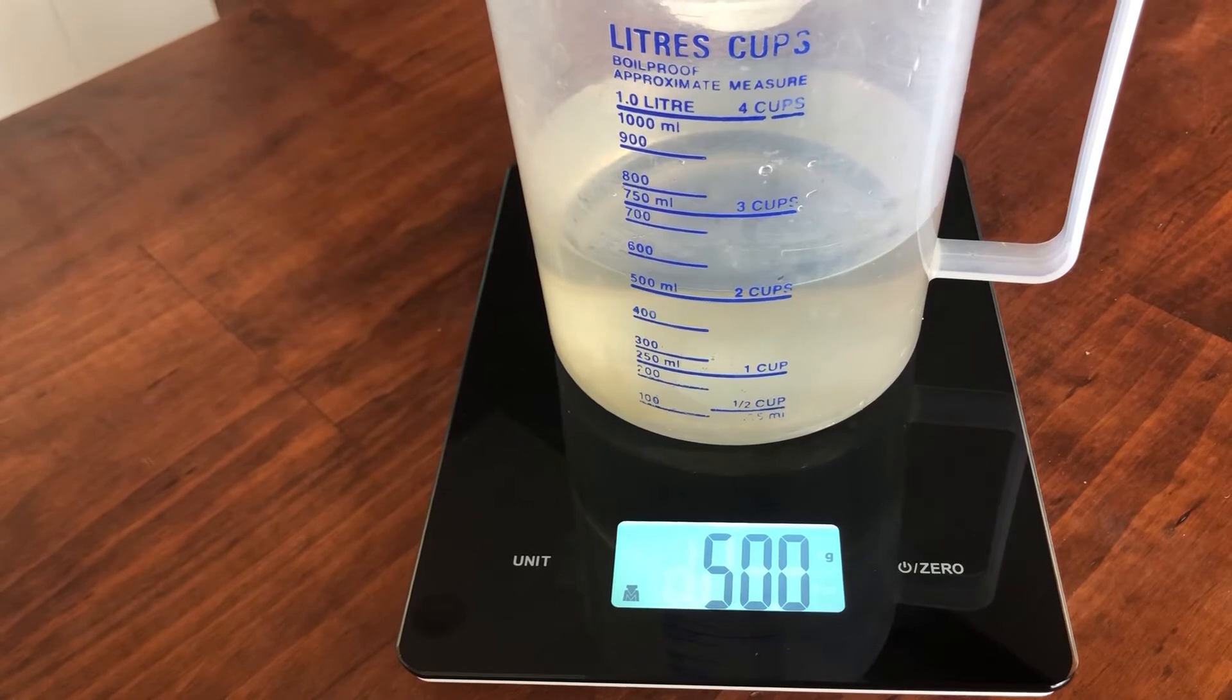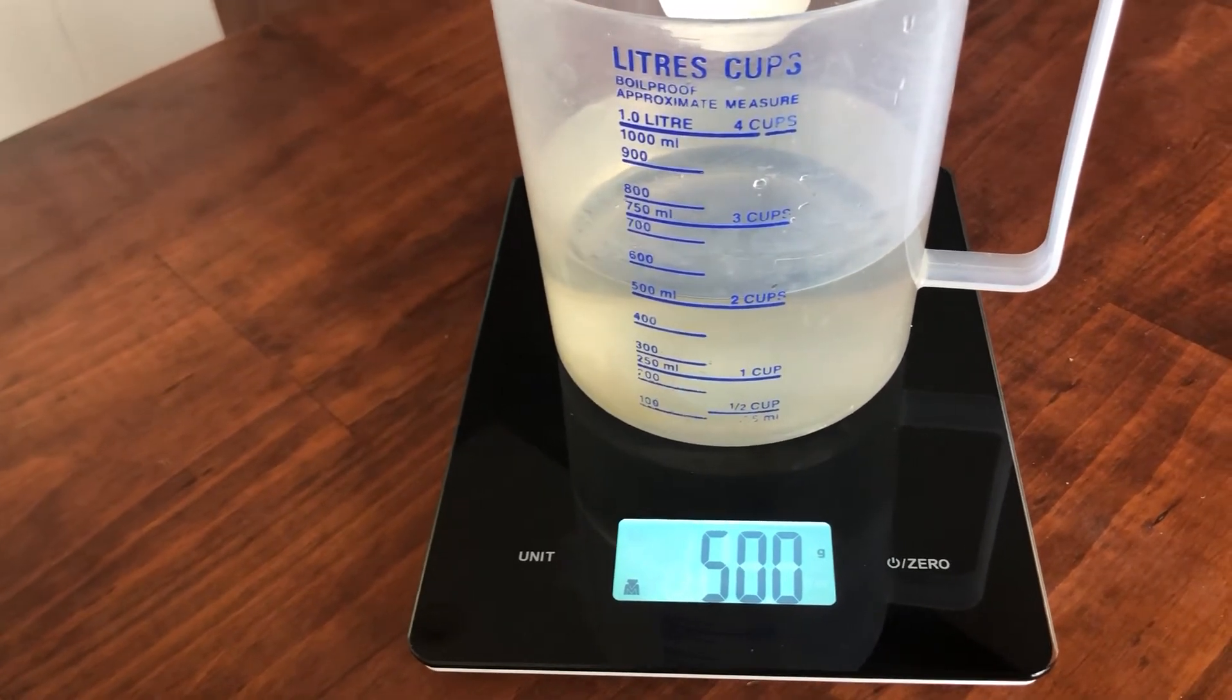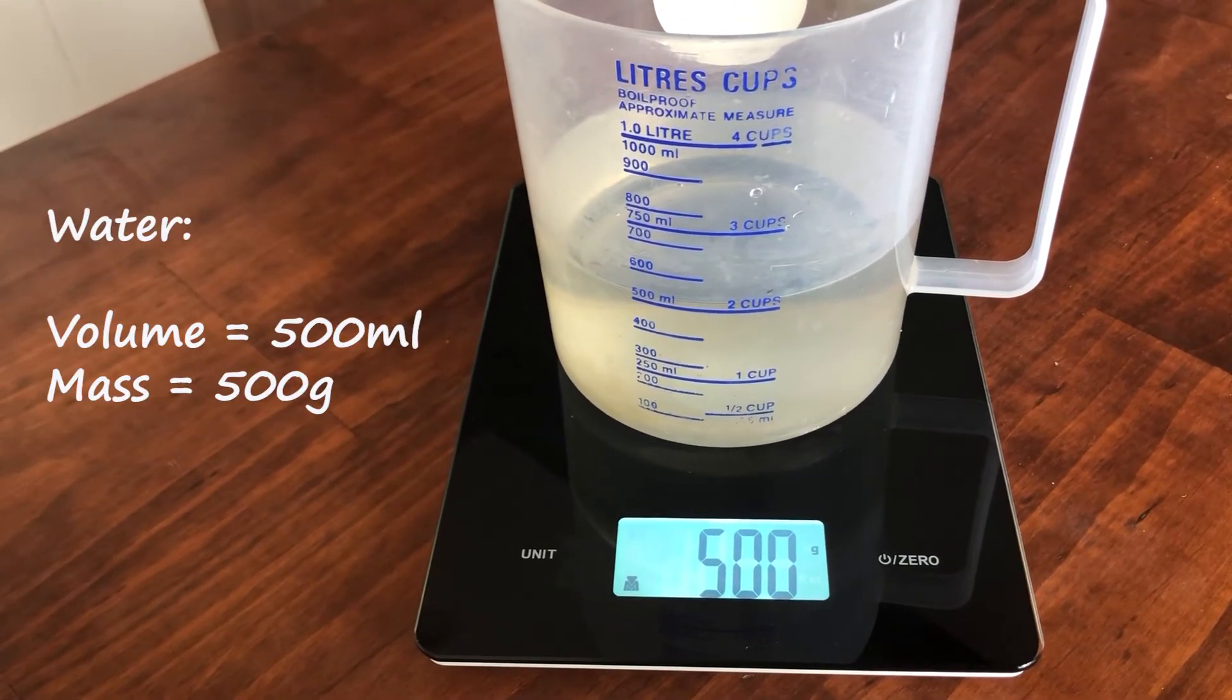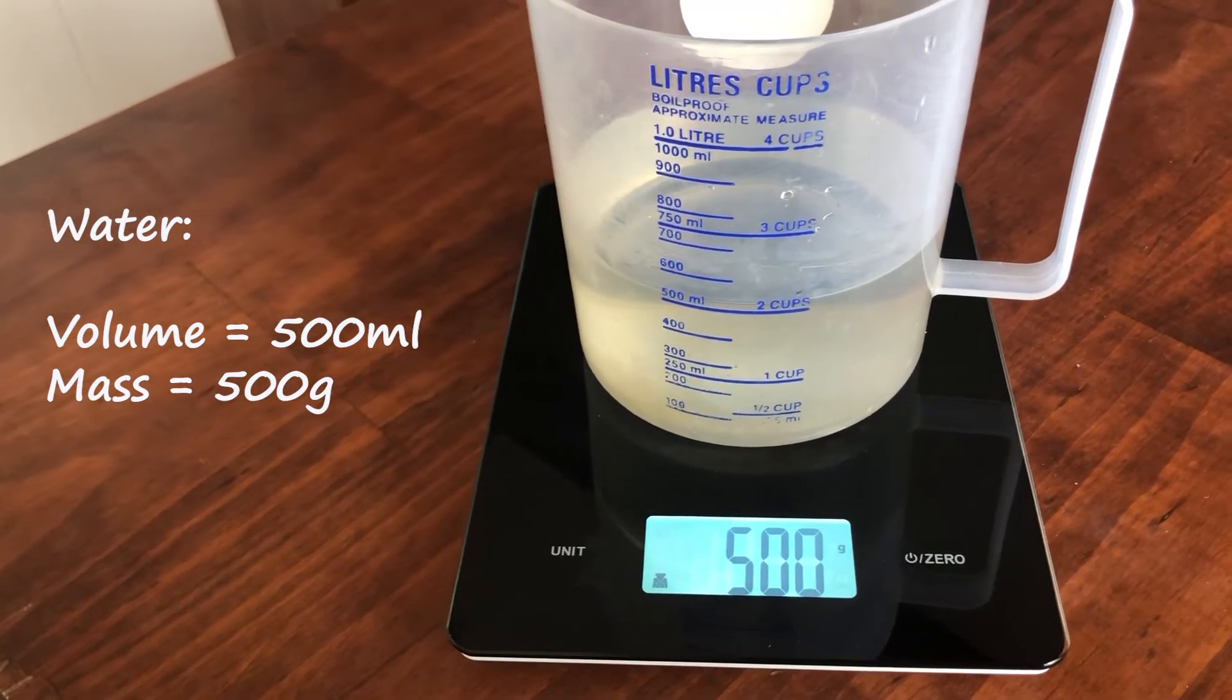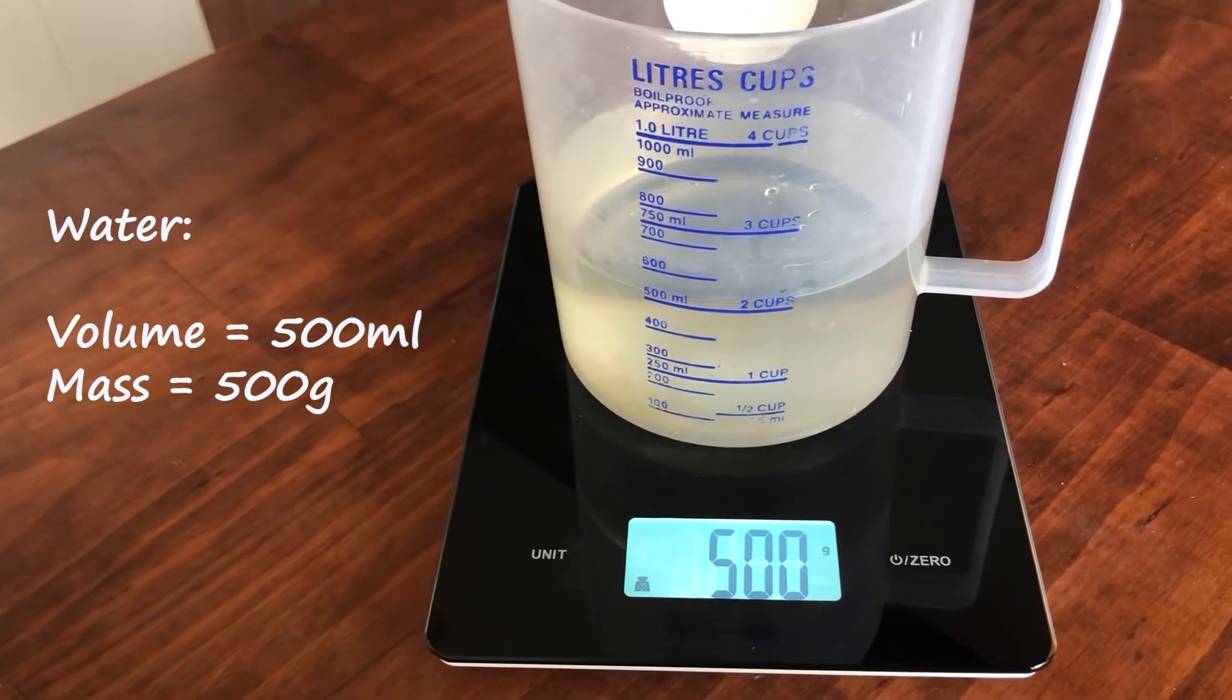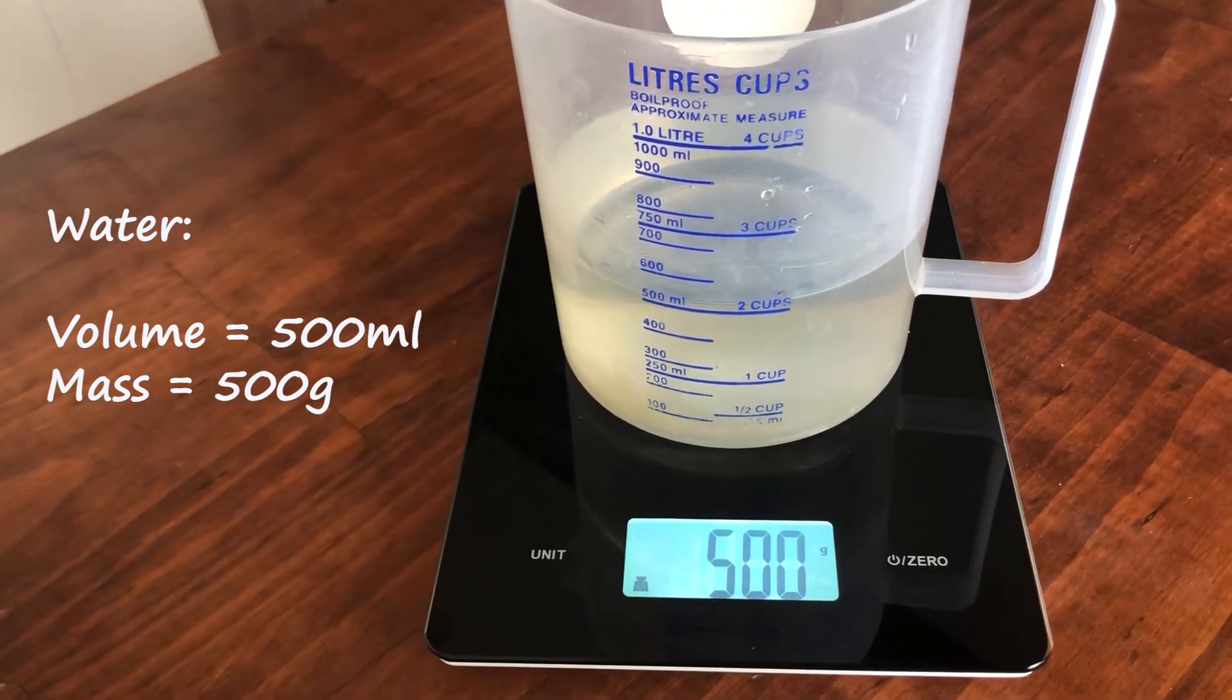That is obviously going to be the mass because this now lets us know how much it weighs in terms of grams. Now all we're going to have to do is take our two values, our 500 grams and our 500 milliliters, and we're going to put that into the density formula for us to solve and then we'll have the density of water.